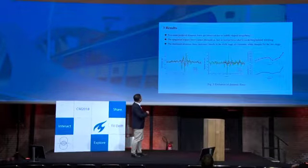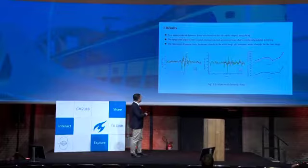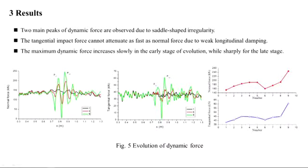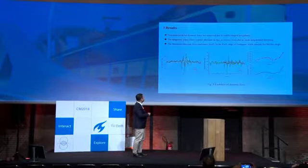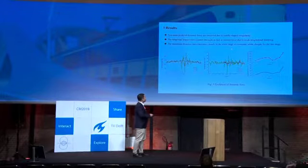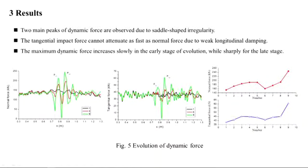Next, I will present some preliminary results. These two figures show the variation of dynamic force, both for normal and tangential force. We can see two main peaks of dynamic force due to the saddle-shaped irregularity at two joints. We can also see that the tangential impact force cannot attenuate as fast as the normal force, because the damping is very weak in the longitudinal direction.